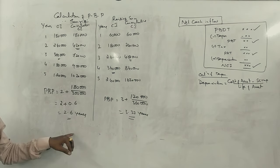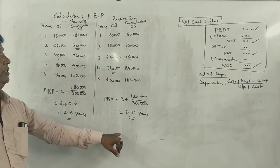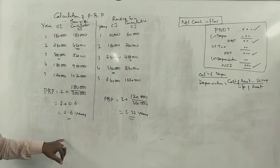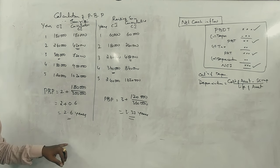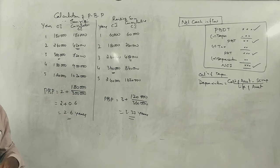2.6 years for Sunrise machine, Rising Sun is 3.33 years, so Sunrise is correct. So machine Sunrise is selected because in 2.6 years our 6 lakh rupees will be recovered.